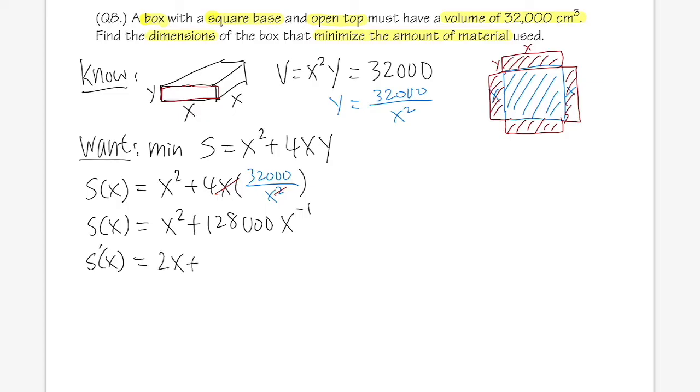We get 2x plus—well, we put the negative one to the front—and then minus one. We get this is actually going to be minus 128,000, and here we have x to the negative 2, so that's over x².